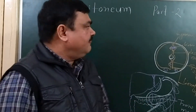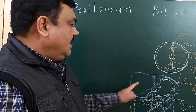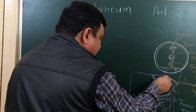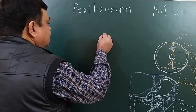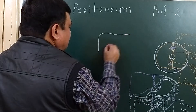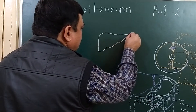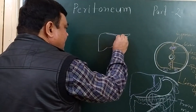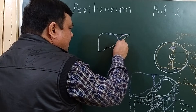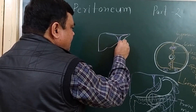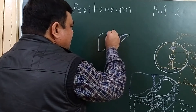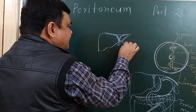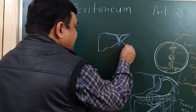We will discuss the folds of peritoneum in relation to the liver. This is the anterior surface of the liver. Here is the position of the fold of the peritoneum — this is the falciform ligament.